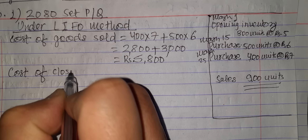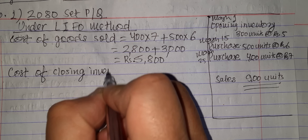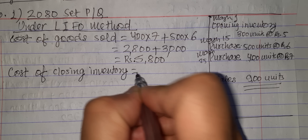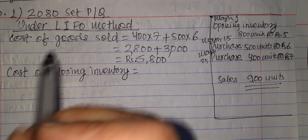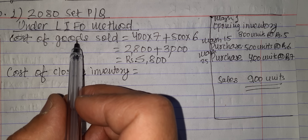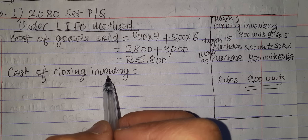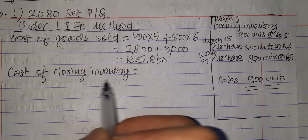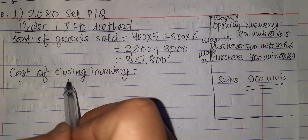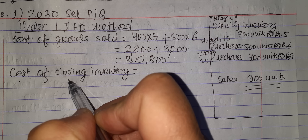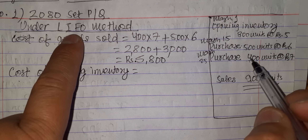Now, the cost of closing inventory, or closing stock. What is the cost of closing inventory? Under LIFO, the remaining goods are from the earliest purchase. It's simple — whichever method you use, last-in first-out means the most recent purchases are sold first.